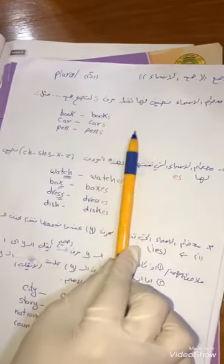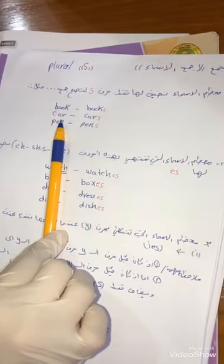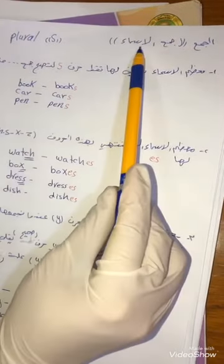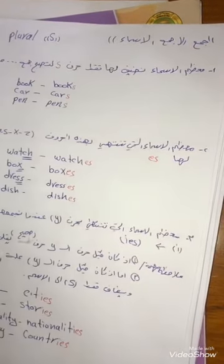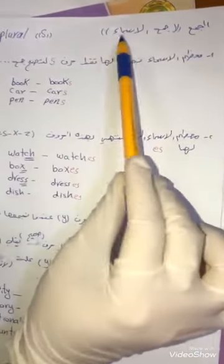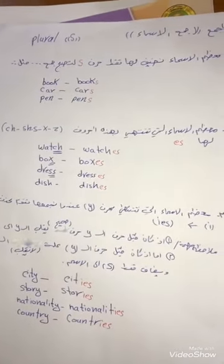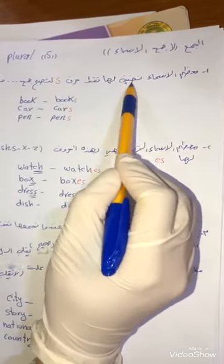Yes, students. Today we have a new and important lesson in English, especially in fifth class. This is the topic of plurals - الجمع. The plural - we add S to the name. What is the rule? Most nouns: we add only S to make the plural. All sentences need to follow these plural rules.